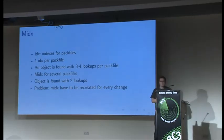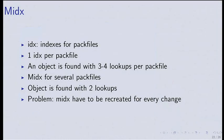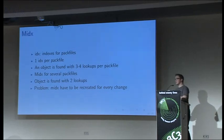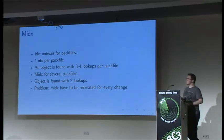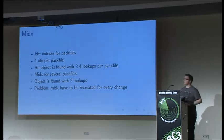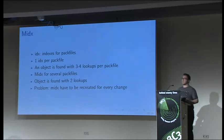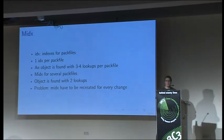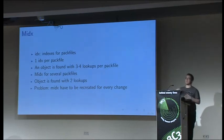Remember Git's pack files? Every pack file has an index, and looking up an object requires about three to four lookups per pack file. With many pack files and millions of 8KB objects from a 200-gig file, that's a lot of lookups. We have MidX for this — MidX is an index spanning several pack files where an object is found in about two lookups. The downside is you have to rewrite the complete MidX file when adding to the repository.